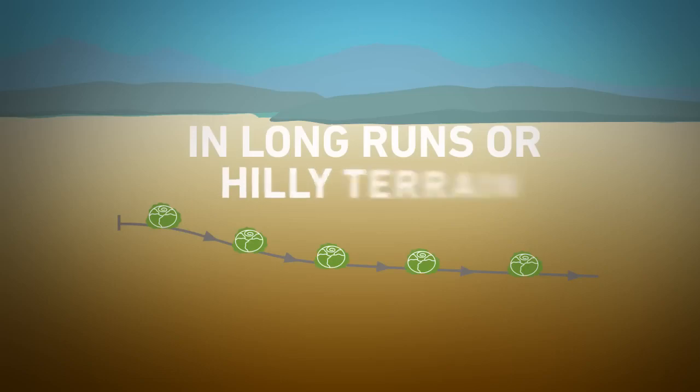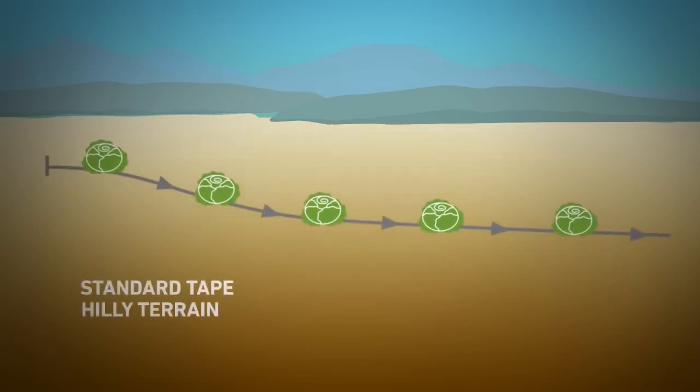Let's take a closer look. On hilly terrain, standard tape will apply more water at lower elevations and less water at higher elevations. This wastes water and fertilizer and results in unwanted runoff, deep percolation, stressed plants, and reduced yield and quality.